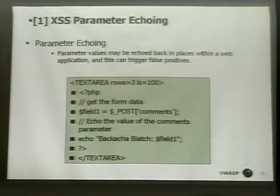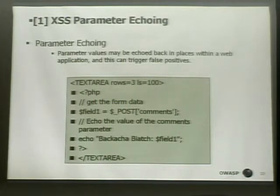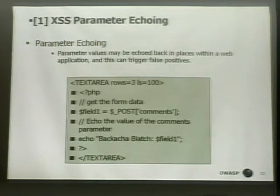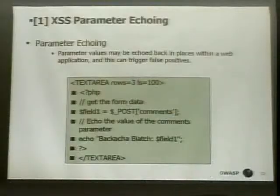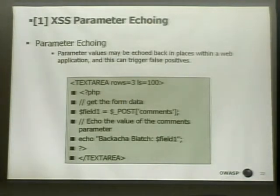In that example, couldn't that be a real vulnerability if the scanner were to inject a closing text area tag? Yeah, if you closed out the text area, you'd break out of it. One of the scanners does have a test to do that, where others don't — and they didn't have that last year, so that's an advance in signature-based technology. But if the scanner doesn't break out of the text area and still reports a cross-site scripting vulnerability, it's a false positive — and also a false negative at the same time.